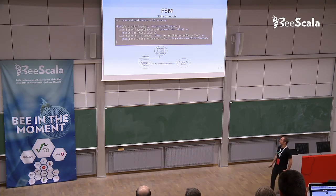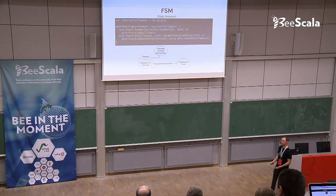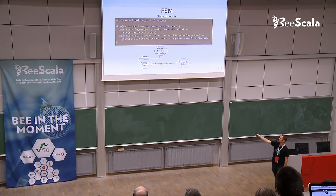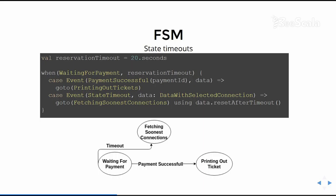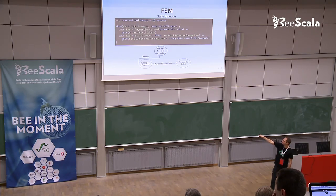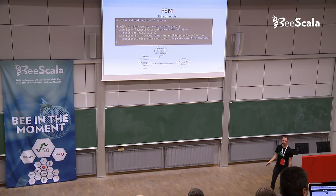I also define a reservation timeout of 20 seconds — this is the time the machine waits for the user to make a payment. In Waiting for Payment, we expect two events. The first is payment successful — the happy path, we just go to printing out tickets. The other is that when the timeout passes, we receive the StateTimeout event. Akka takes care of sending us this event and we can handle it like any other event. We go back to Fetching Soonest Connections and reset our data, since we no longer have the selected connection.